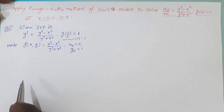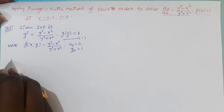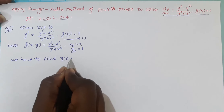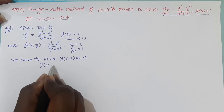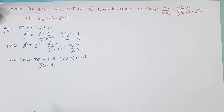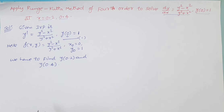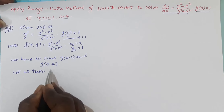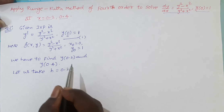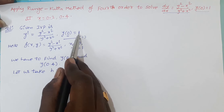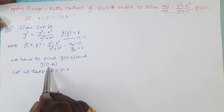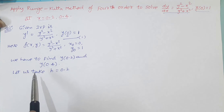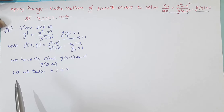Our aim in this problem is to find y(0.2) and y(0.4). The step size h value is not provided in the statement, so we have to choose it. Let us take step size h = 0.2, because y(0) = 1 is provided, and we need y at 0.2 and 0.4. So we have x values 0, 0.2, and 0.4. In this RK method it is better to take the difference between x values as h.